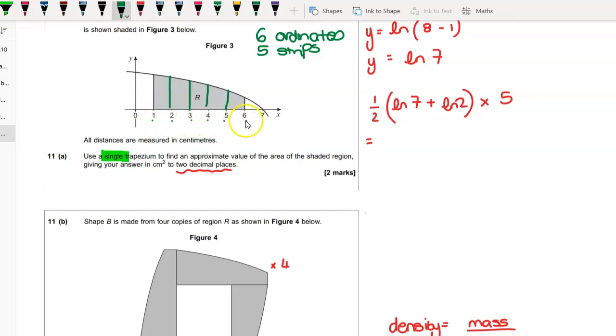So you just put your trapezium rule - it's in your formula book. And your trapezium rule tells you we've got half of... it's half times a plus b times two times the sum of the rest of them, I think.